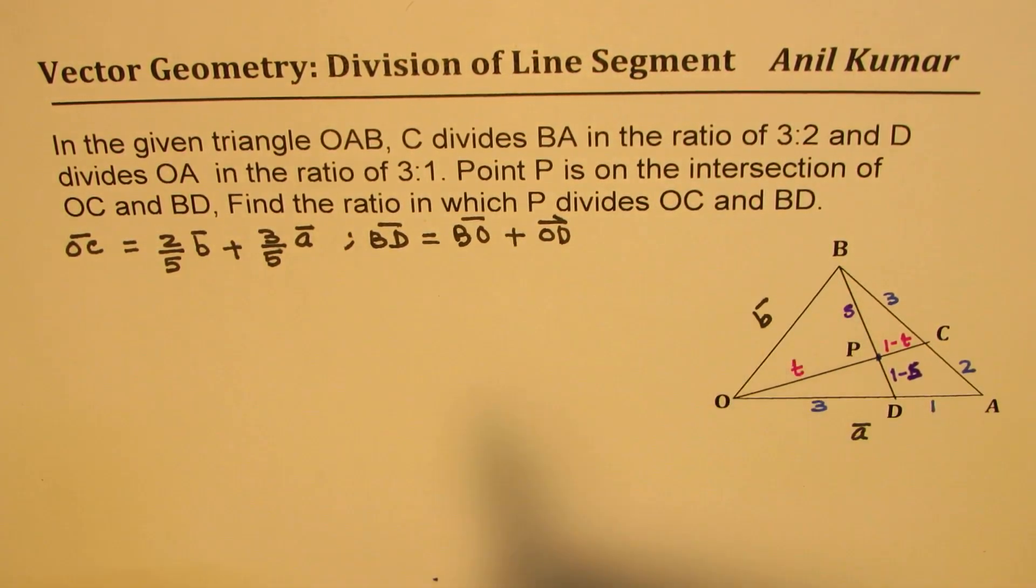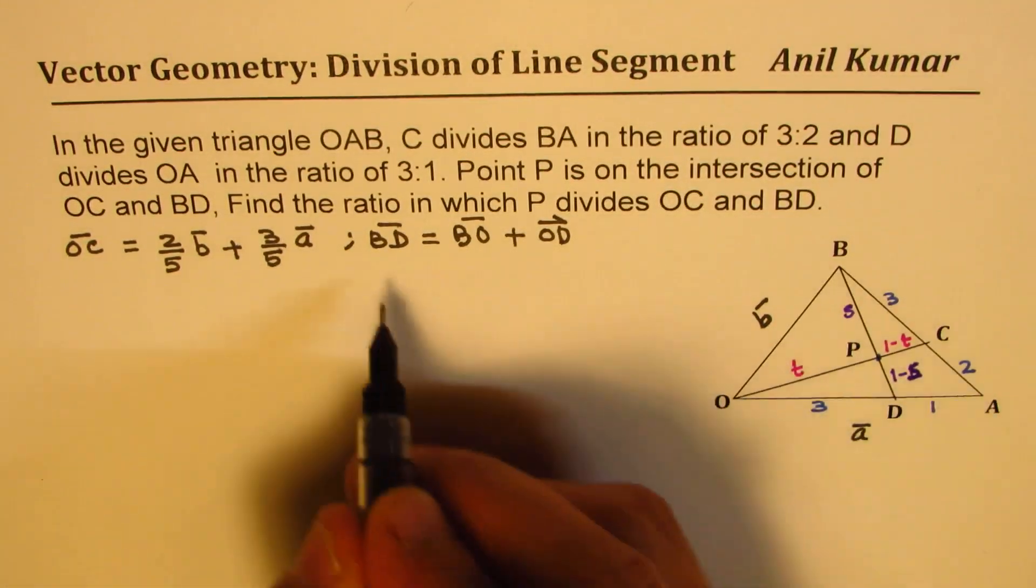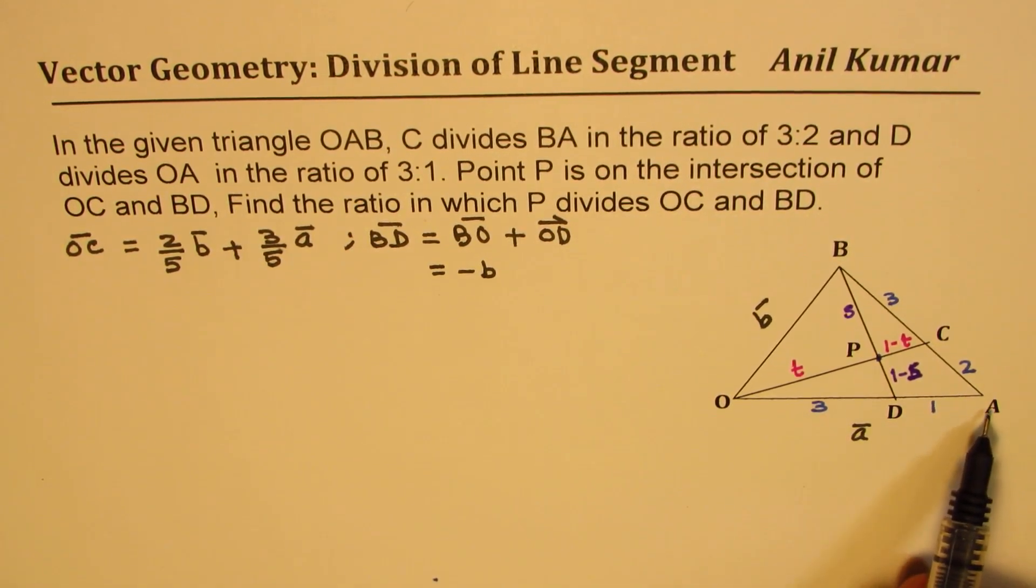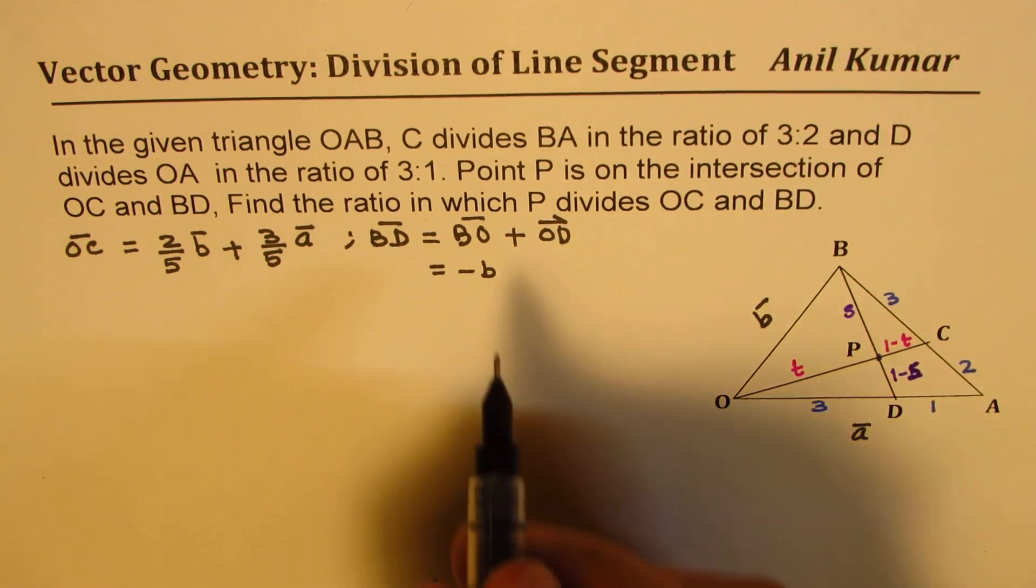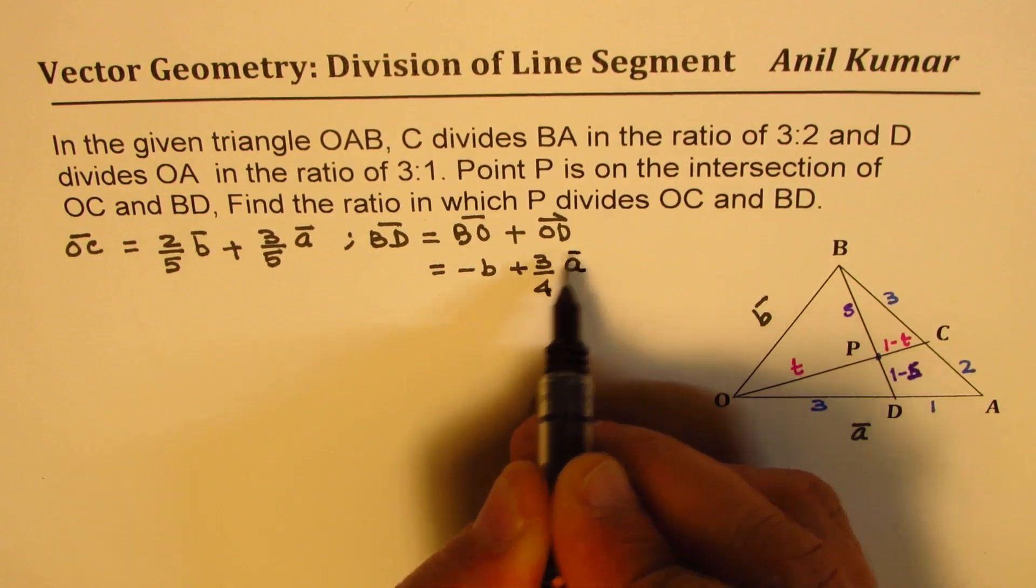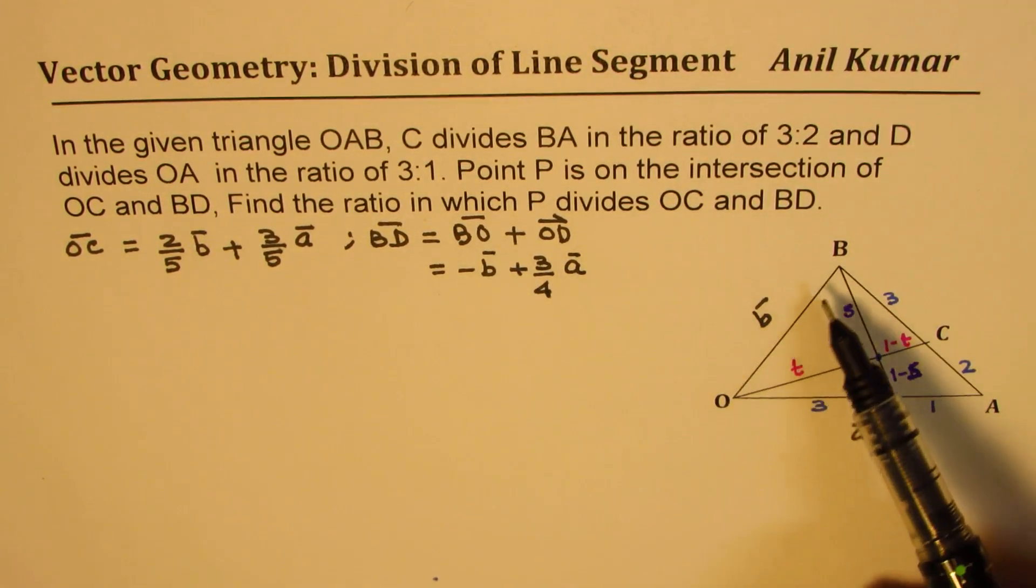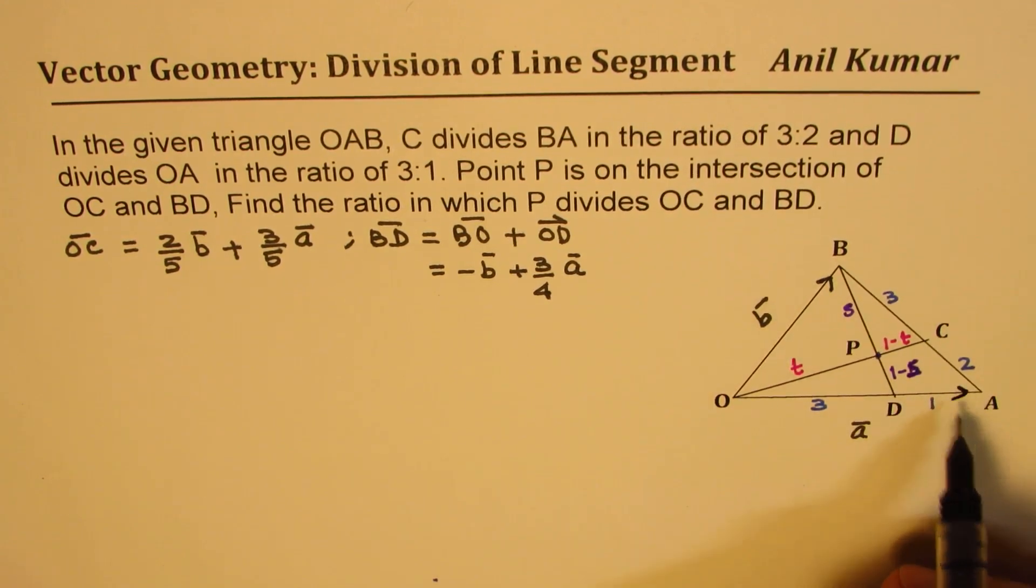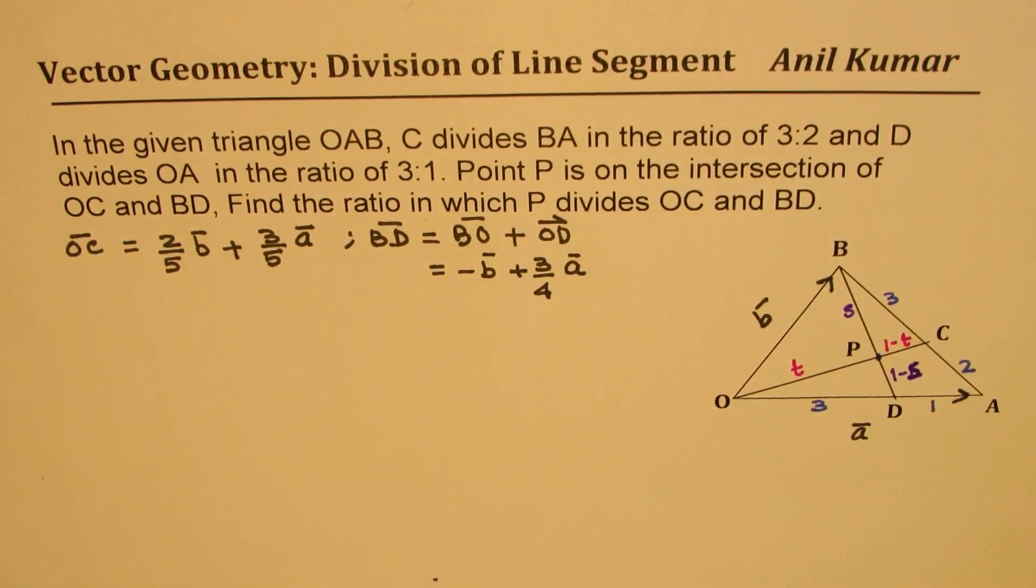So BO is minus B. And OD is, we divided A into 4 equal parts, so 3 out of 4. Is that clear? So when you go in this direction, BO, since vector B we have taken like this, vector A we have taken in this direction. So BD will be BO, OD. So we got this point.